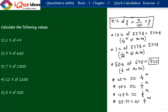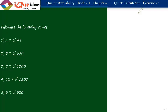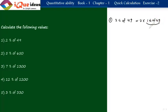Question 1: 2 percent of 49. We can say it is 2 into 1 percent of 49. This calculation should be done mentally. 1 percent means divide by 100, so place the decimal 2 digits before the end: 0.49. Then 2 into 0.49 gives 0.98. That is the answer.